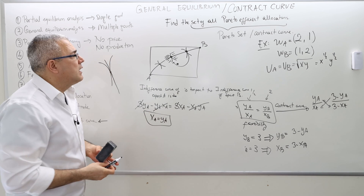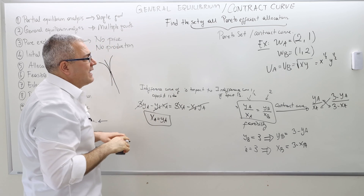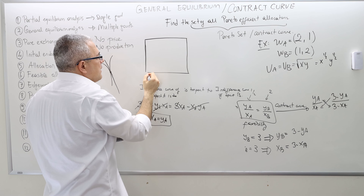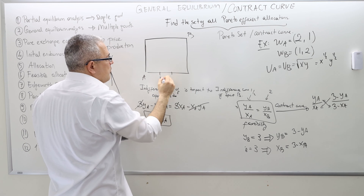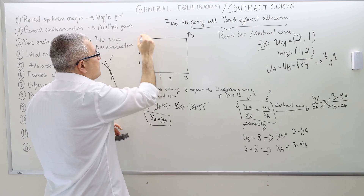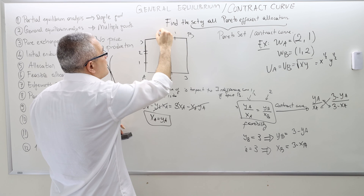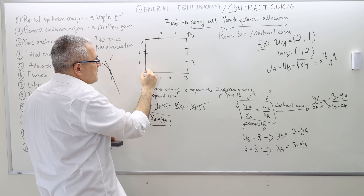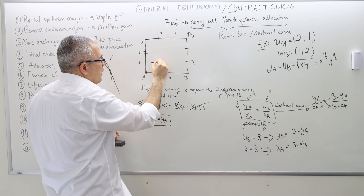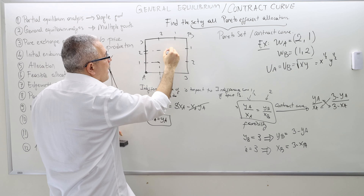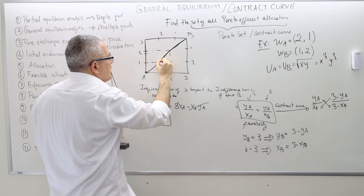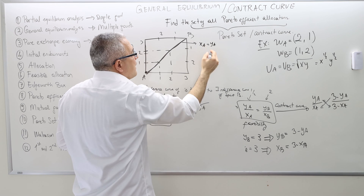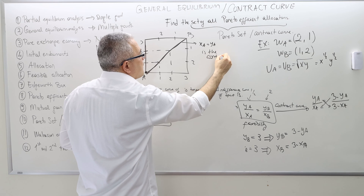XA = YA — that's it! In the Edgeworth box, which is a 3 by 3 square, this means the contract curve runs diagonally from (0,0) through (1,1), (2,2), and (3,3). It is the X equals Y line. So as long as agent A consumes the same amount of good X and good Y, that allocation is Pareto efficient. If they consume different amounts of good X and good Y, it is not Pareto efficient.